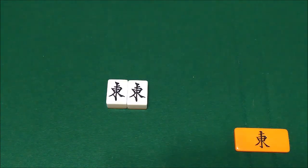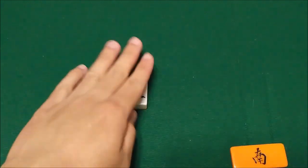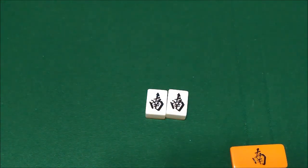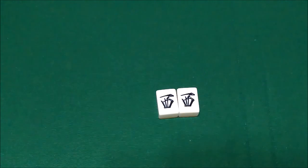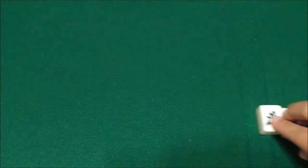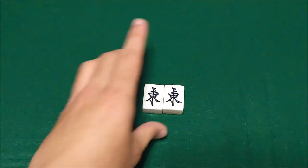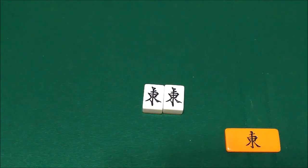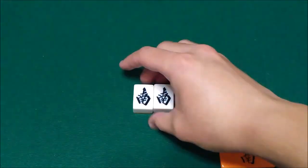For the wind tiles, it's a little bit different. If it is the round wind, so for instance, let's say it's the East round and your pair is the East, that's worth 2 Fu. Similarly, if it's South, your pair of South is worth 2 Fu. Another way the winds can be worth Fu is based on your seating. If you are West, meaning you're sitting across from East and you have a pair of West, that is worth 2 Fu. This stacks with the Fu you gain from it being the round wind. So if you are East and it is East, this pair is worth 4 Fu. 2 from being the round wind and 2 from being your wind.